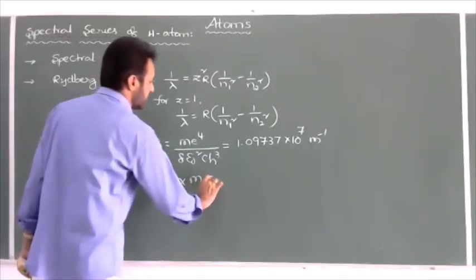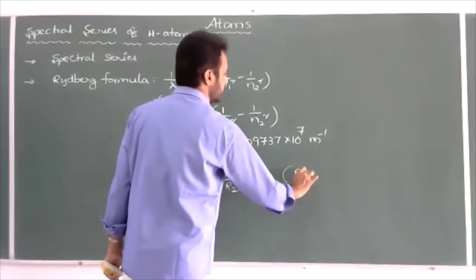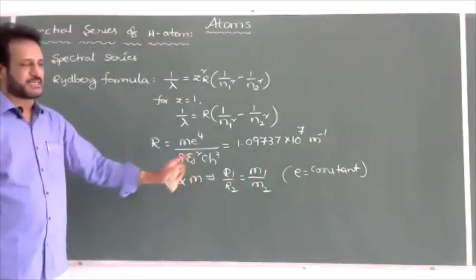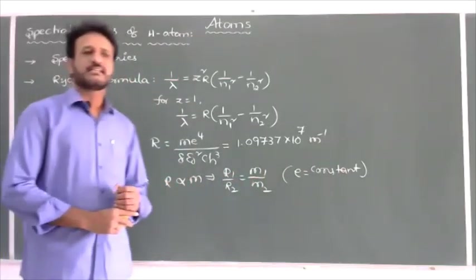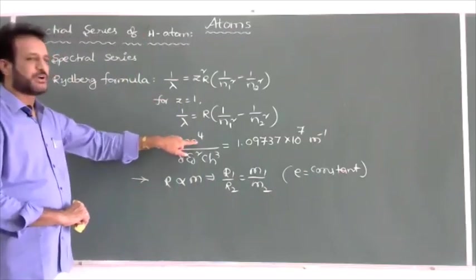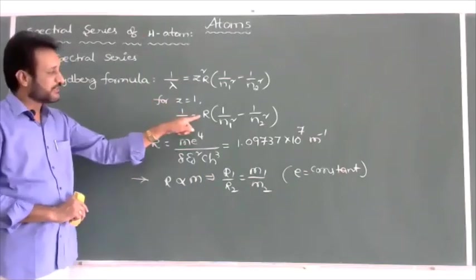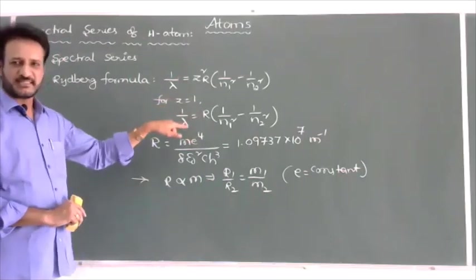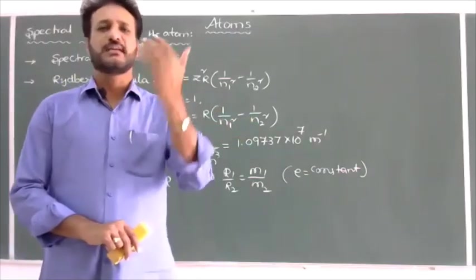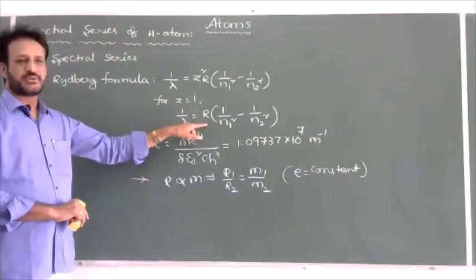If the mass of the hypothetical particle is double the mass of the electron, then R also doubles. So in the Rydberg formula you should write 2R: 1/λ = 2R × (1/n₁² − 1/n₂²). If the mass is 4 times, then R becomes 4R: 1/λ = 4R × (1/n₁² − 1/n₂²). These substitutions must be made whenever a hypothetical particle with different mass is given.